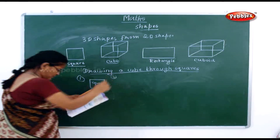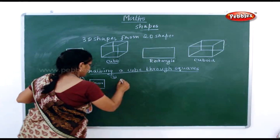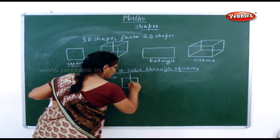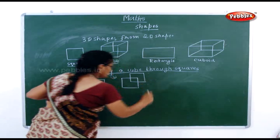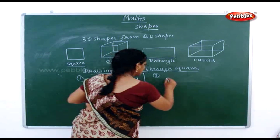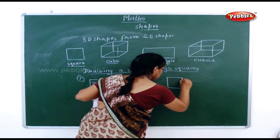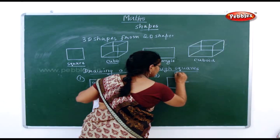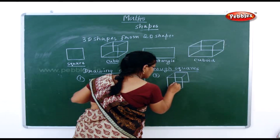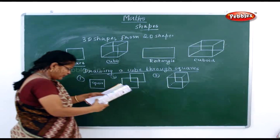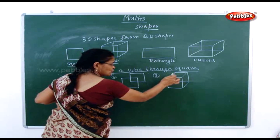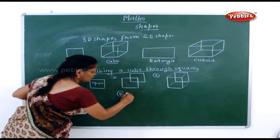What is the second step? Draw another square as shown. One square already you have drawn, now one more square you have to draw. Third step: draw dotted lines joining the corresponding corners. With these dotted lines you have to draw a perfect cube.